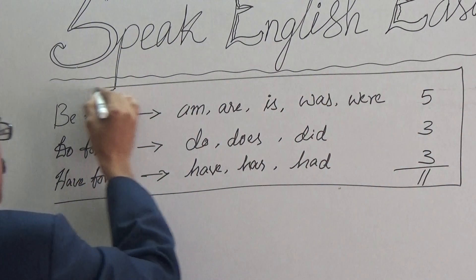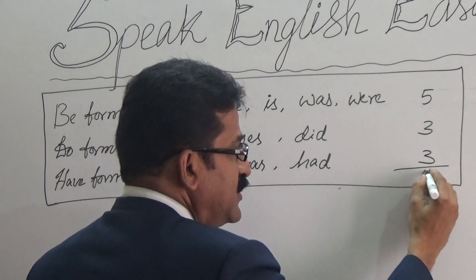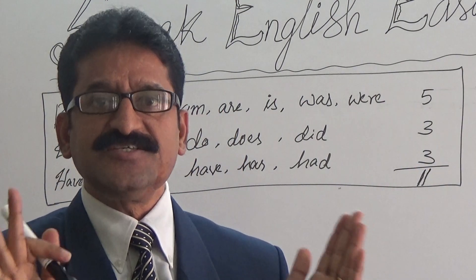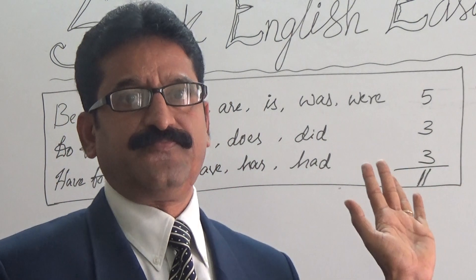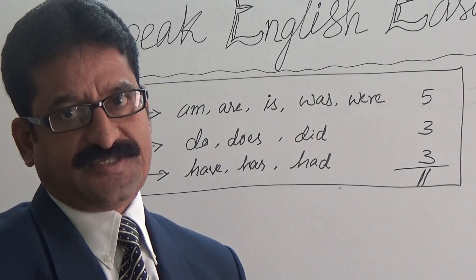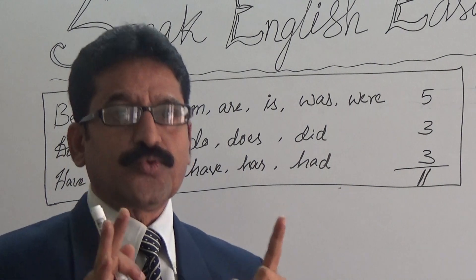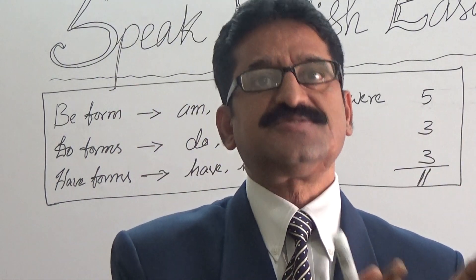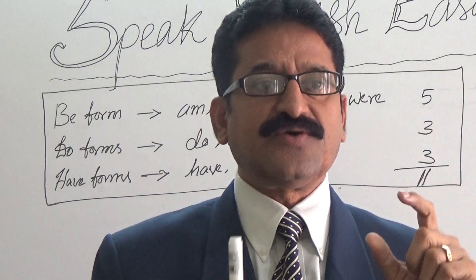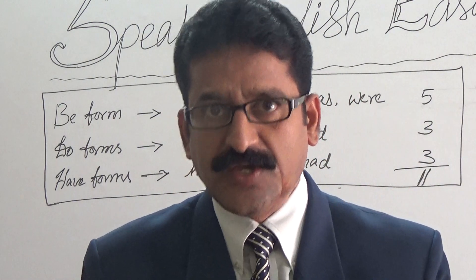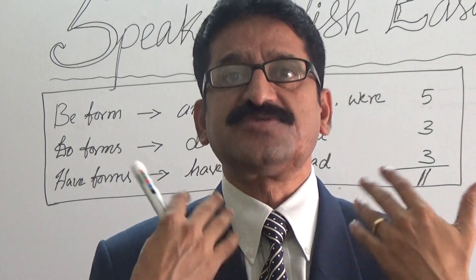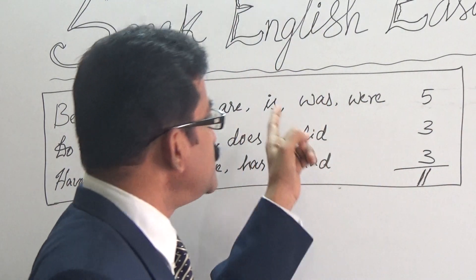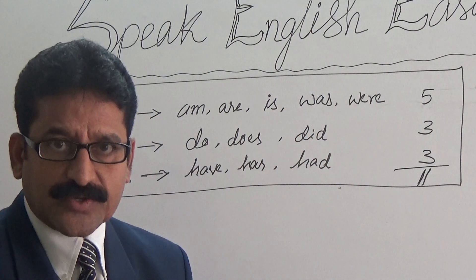If we learn these 11 words and know how to use them effectively, we can easily speak English even though we don't have command over English grammar. Before going to use them, we have to know one thing: what is spoken English? Spoken English is all about asking questions and giving answers. When someone wants to get some information, he has to ask a question; when someone asks a question, we are supposed to give an answer. This questioning and answering is all about spoken English.